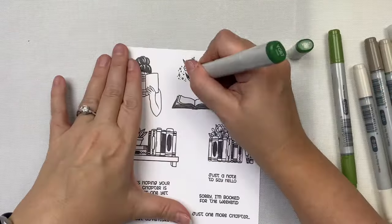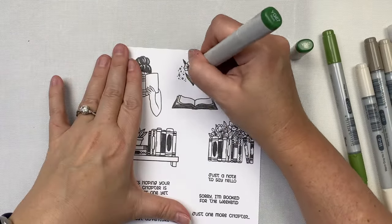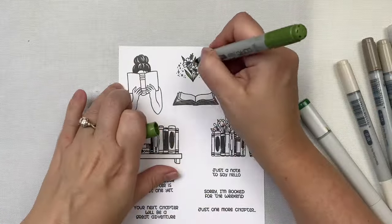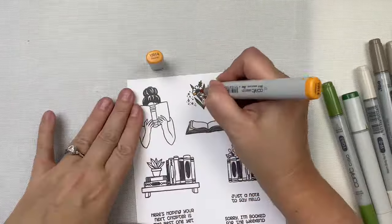Next I selected Copic markers that match the colors of the kit to color in my images, and I will list each of the colors that I used in the description as well.